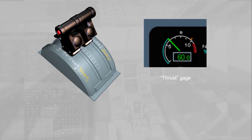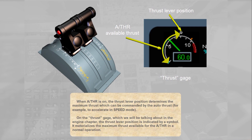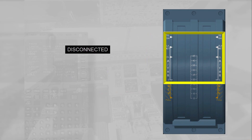On the thrust gauge, which we will be talking about in the engine chapter, the thrust lever position is indicated by a symbol. It materializes the maximum thrust available for the autothrust in normal operation. The autothrust has three states: it can be either disconnected or off, armed — ready to be set to on by a specific pilot action on the thrust levers — or active, i.e. on.